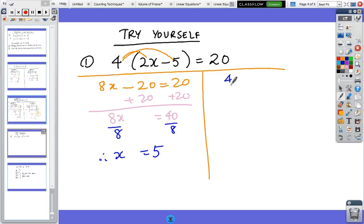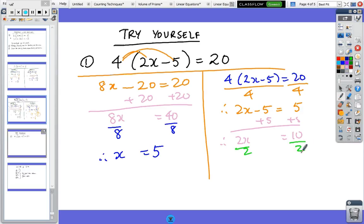Method 2: 4 bracket 2x minus 5 equals 20. Method 2 is divide by 4 straight away. So 2x minus 5, 20 divided by 4 is 5. Plus 5, plus 5. So 2x equals 10. Divide by 2, divide by 2, and so x equals 5, which is the same answer.